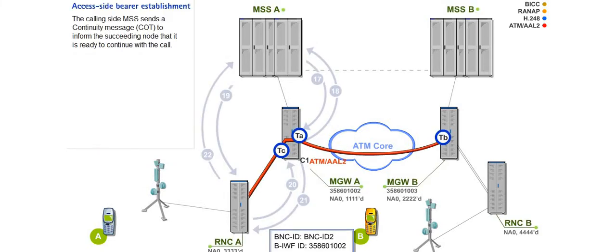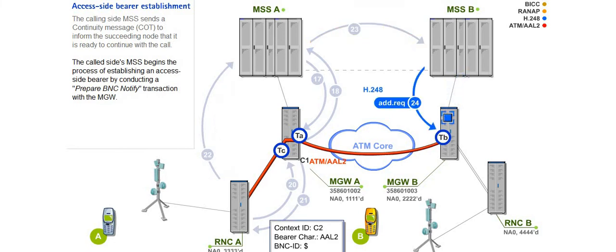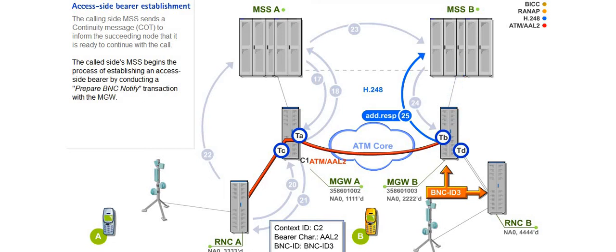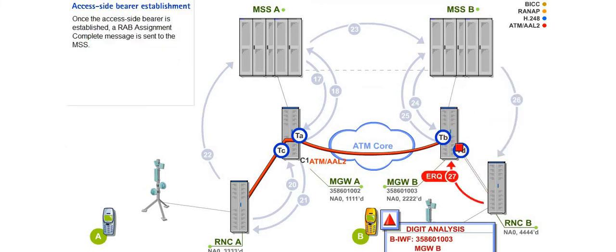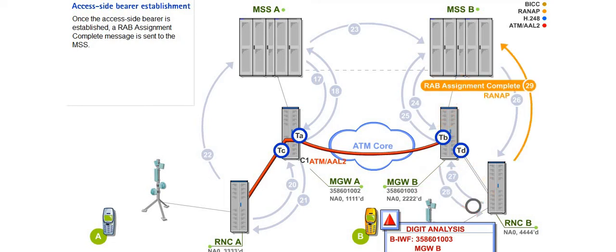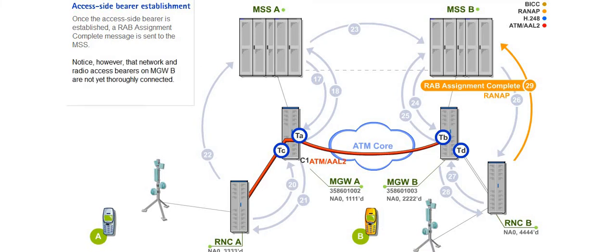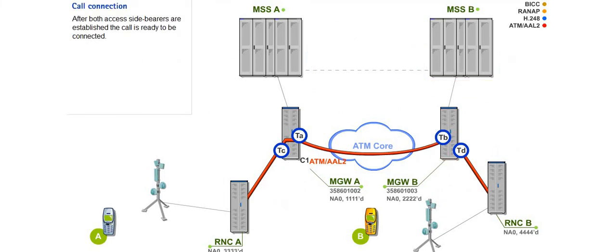The calling side MSS sends a continuity message, or COT, to inform the succeeding node that it is ready to continue with the call. The called side's MSS begins the process of establishing an access side bearer by conducting a prepare BNC notify transaction with the MGW. Then an RAB assignment request is sent. Once the access side bearer is established, an RAB assignment complete message is sent to the MSS. Note, however, that network and radio access bearers on MGWA are not yet fully connected. After both access side bearers are established, the call is ready to be connected.